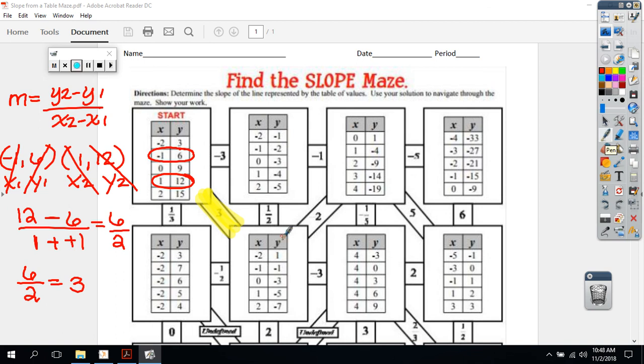And then you would do this next problem. You would do this one next and pick two ordered pairs. You could pick whatever numbers you want. Doesn't matter. And that's how you find slope from a table.